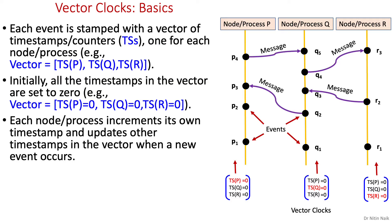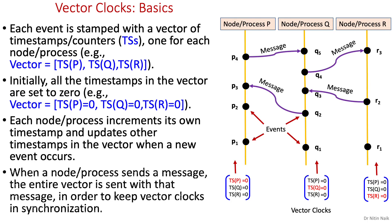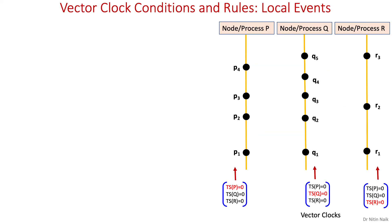Each node increments its own timestamp and updates other timestamps in the vector when a new event occurs. The rule to increment values of timestamps is dependent on the type of event — whether it is a local event or received message event. We will have a more in-depth look later on. When a node sends a message, the entire vector is sent with that message in order to keep vector clocks in synchronization. Now we are going to discuss two conditions and rules for incrementing a vector clock.